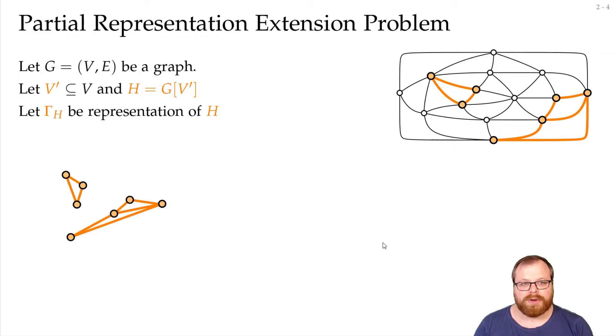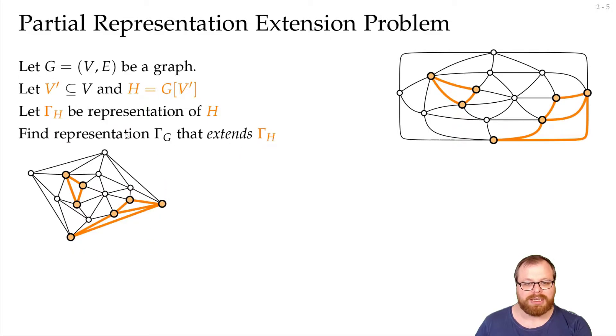Now let's further assume that for this subgraph we already have a representation. In the example of straight line drawings we already have a straight line drawing of the graph H. And now we want to find a representation of G that extends this representation. So we want to find a straight line drawing of the graph G where all the vertices of H are placed in exactly the same spot as in the representation of H.